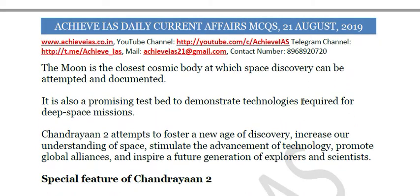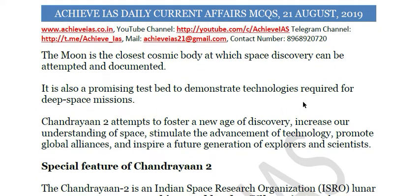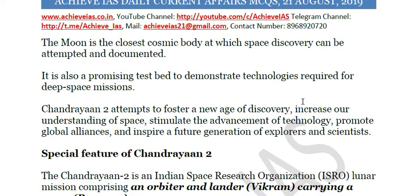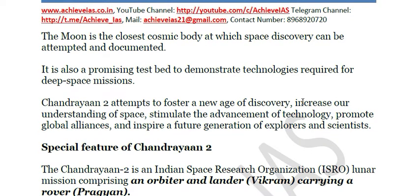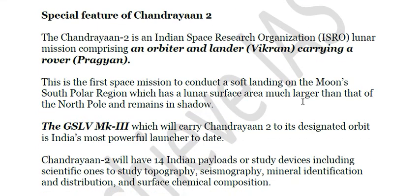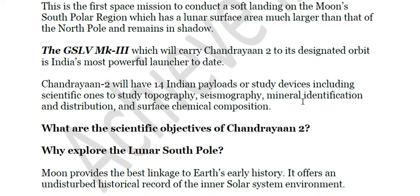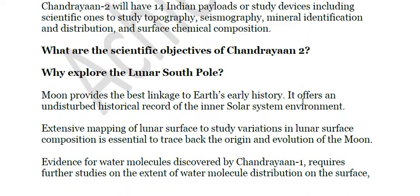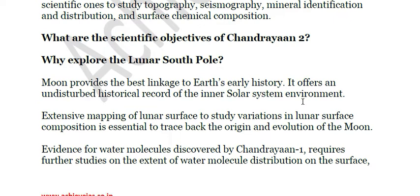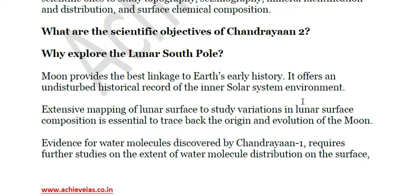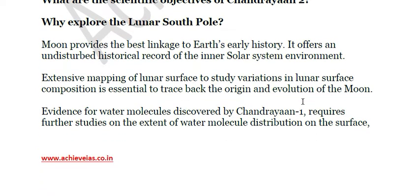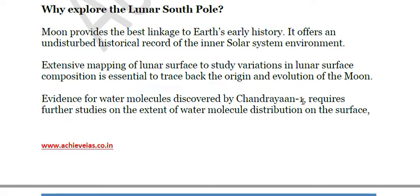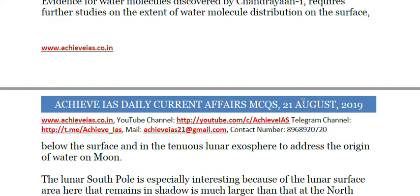Chandrayaan-2 has three parts: an orbiter that will orbit around the moon — it had in fact entered the lunar orbit recently — a lander called Vikram that will soft land on the surface, and a rover called Pragyan that will do reconnaissance over the lunar surface. The lunar south pole is being explored because it is largely unexplored, away from sunlight radiation, one of the coldest regions of the moon, and evidence for water molecules discovered by Chandrayaan-1 required further study.